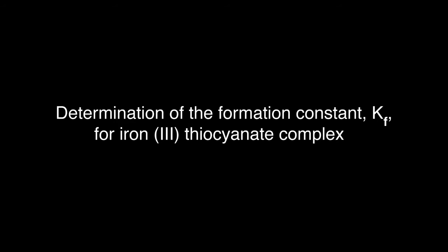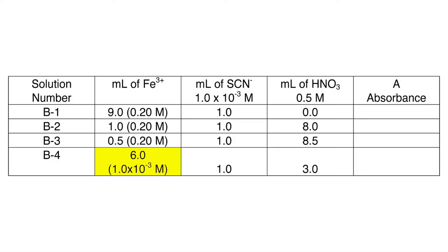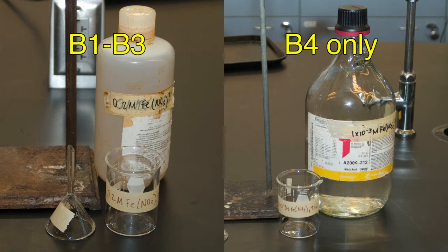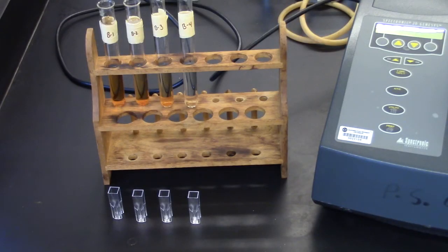Determination of the formation constant KF for iron-3-thiocyanate complex. Prepare the following solutions in medium test tubes and mix well. Remember the helpful hint that B4 uses a different concentration of iron than solutions B1 through B3. In mixture B1,